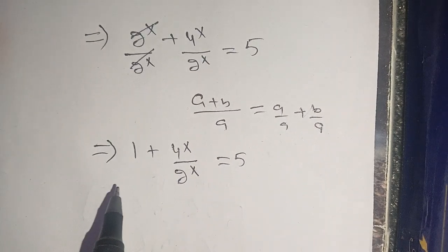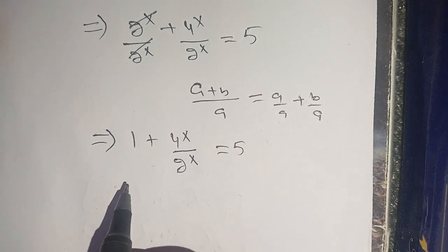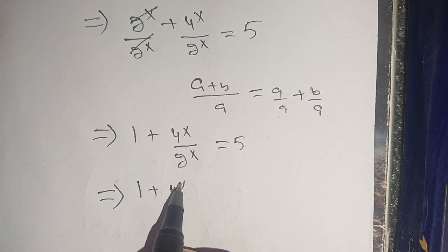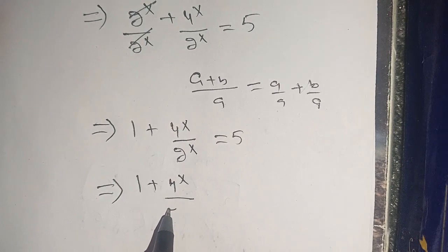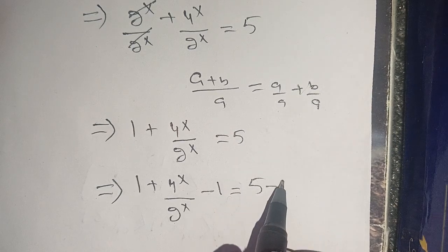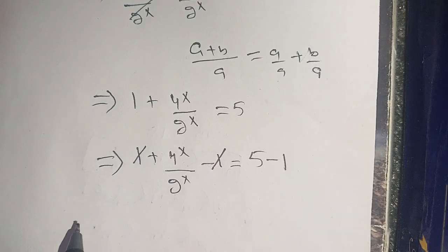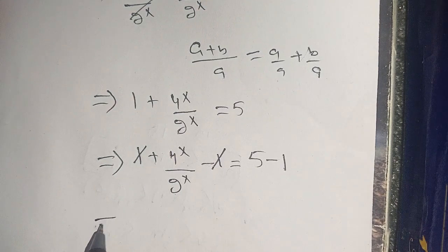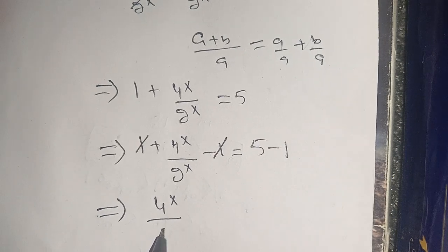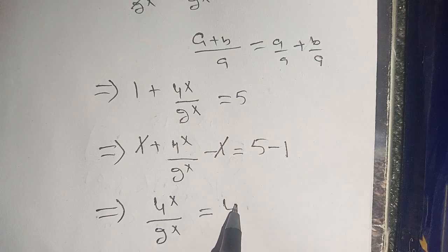In the next step, subtracting 1 from the left hand side as well as from the right hand side, we have 1 plus 4^x divided by 2^x minus 1, equal to 5 minus 1. The plus 1 and minus 1 cancel out, leaving 4 raised to power x divided by 2 raised to power x equal to 4.